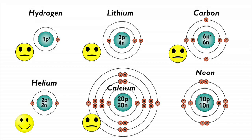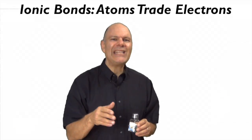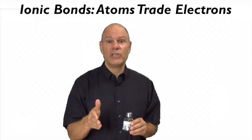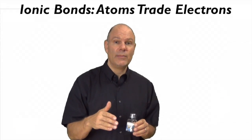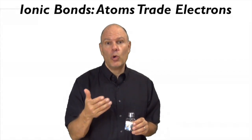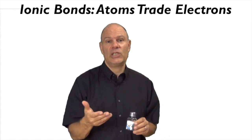Calcium has two electrons in its outer shell, but that's the fourth orbital, and that makes calcium an unhappy atom. Neon has eight outer electrons in its second orbital. The capacity is eight, there are eight electrons there, so neon's a happy atom. Let's see how unhappy atoms can interact with other unhappy atoms in a way that fills their outer orbitals and makes them happy.